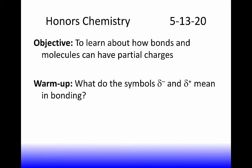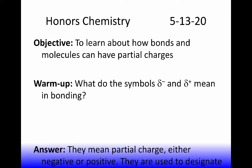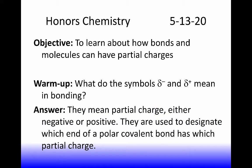The first question is: what do the symbols delta minus and delta plus mean in bonding? These are lowercase Greek deltas. They mean partial charge — either a negative or positive partial charge. They're used to designate which end of a polar covalent bond has which charge. The end with the larger electronegativity will be partially negative, and the end with the smaller electronegativity will be partially positive.